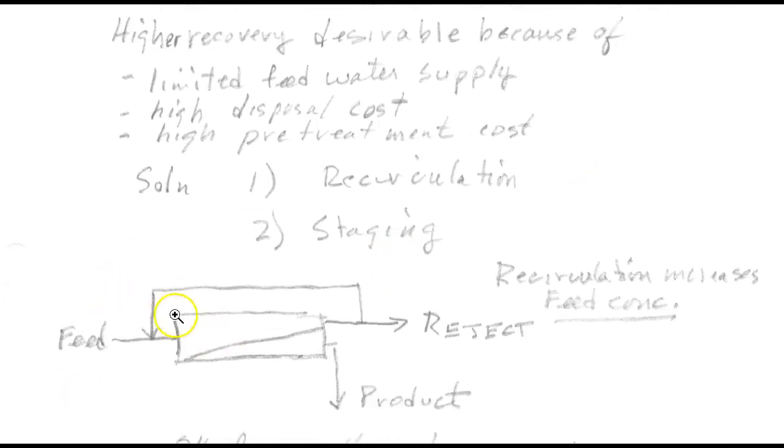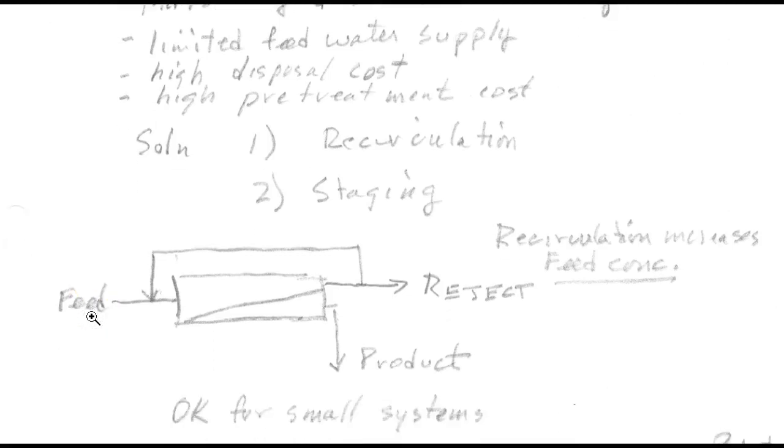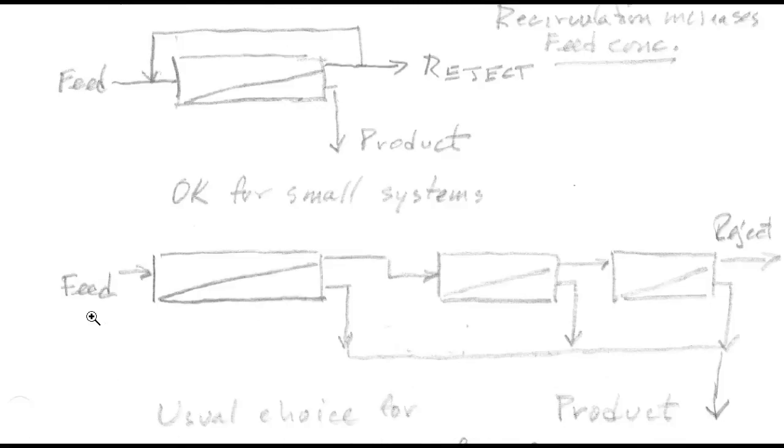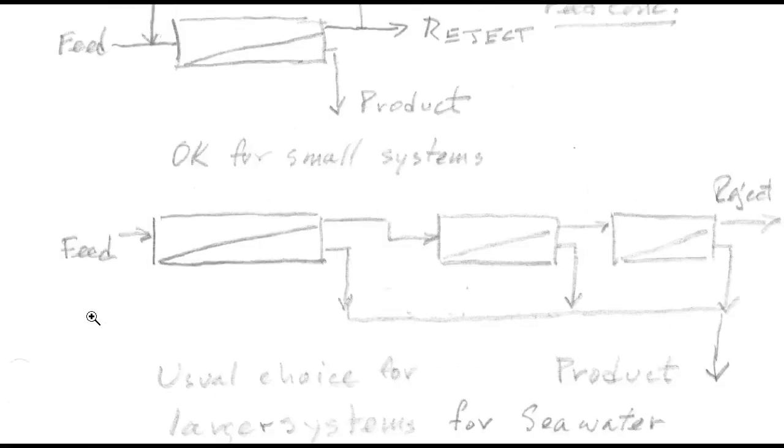Recirculation would look like this, where you're going around and around, and that would be a common practice for a smaller facility. The staging option is like this, where you would have several modules in series collecting the product off each one, and the reject stream from the first would go to the second and from the second to the third. This is the usual choice for larger systems for seawater.